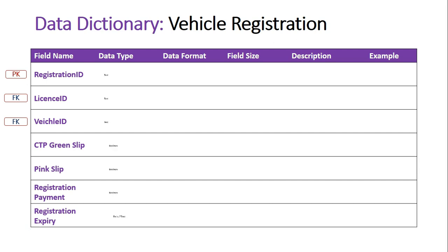For data types: Registration ID is text, and so are License ID and Vehicle ID — however, the only one actually being entered in this database is the Registration ID, since the License ID and Vehicle ID are pulled across from their respective entities. The data entry operator won't be creating new IDs here; they're imported from those other database tables.